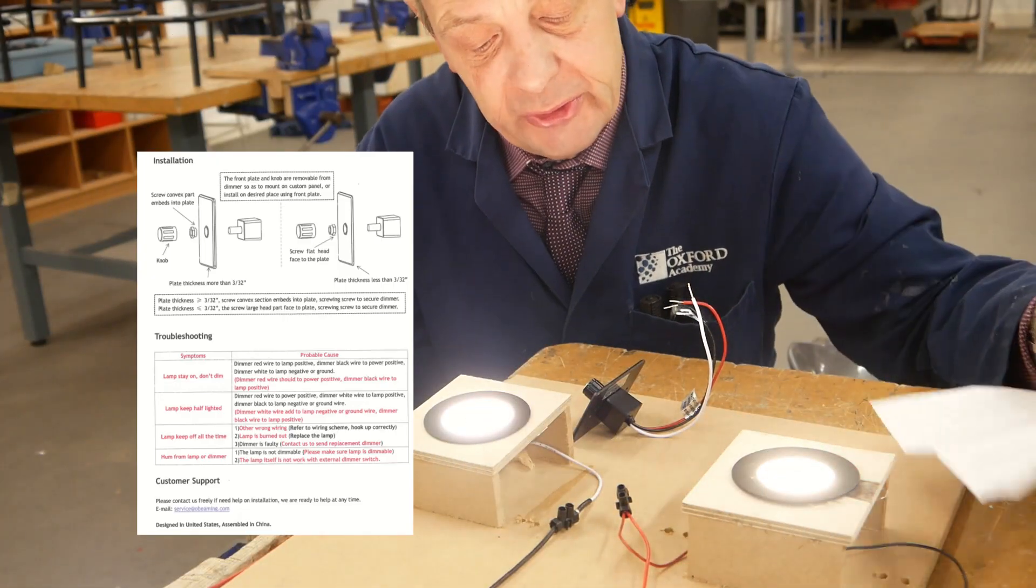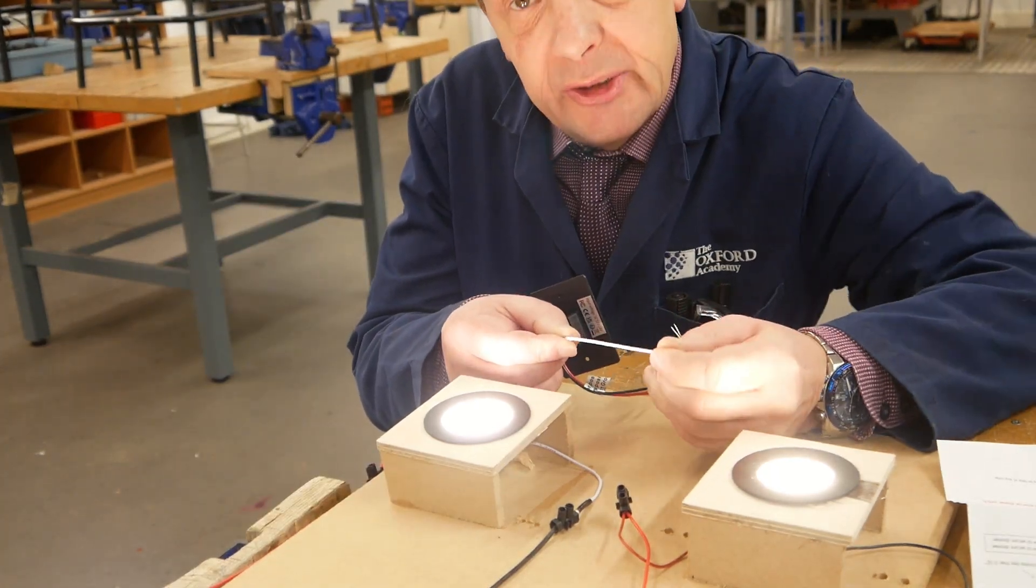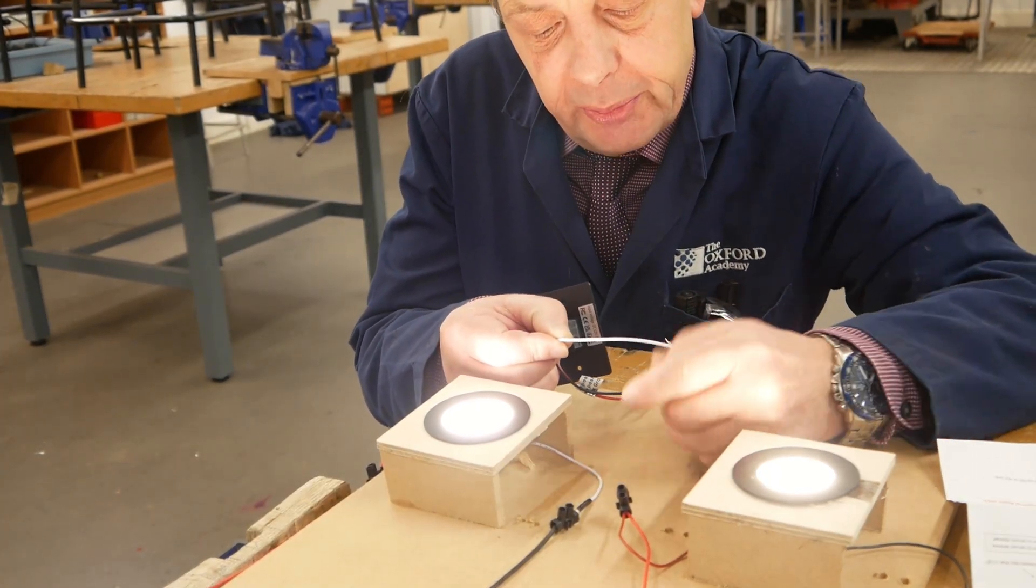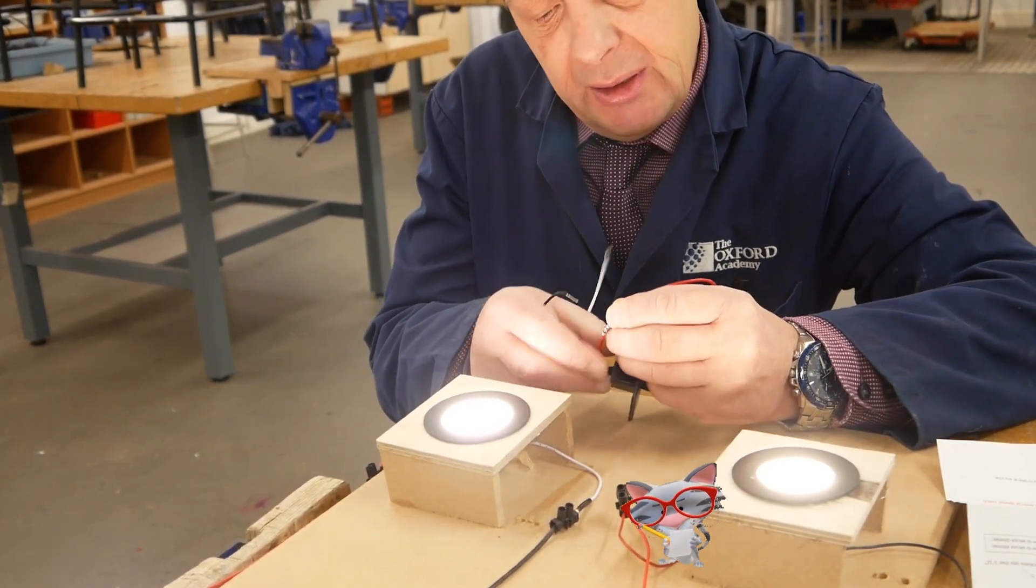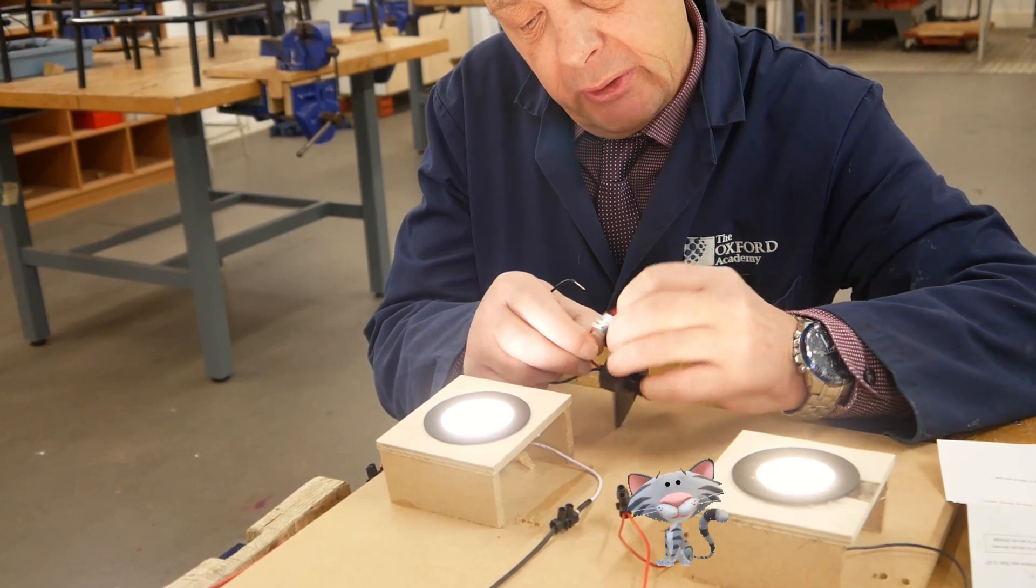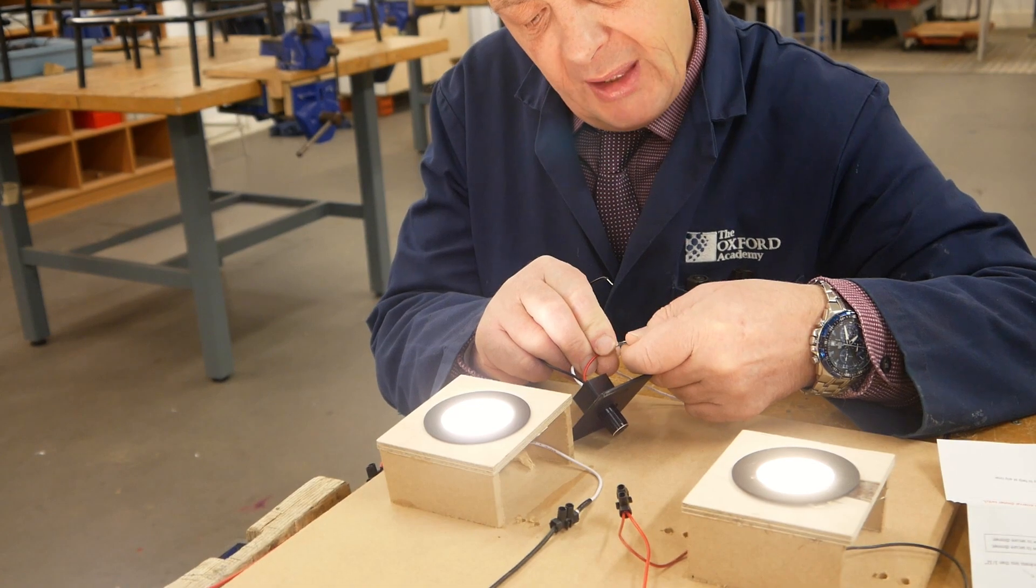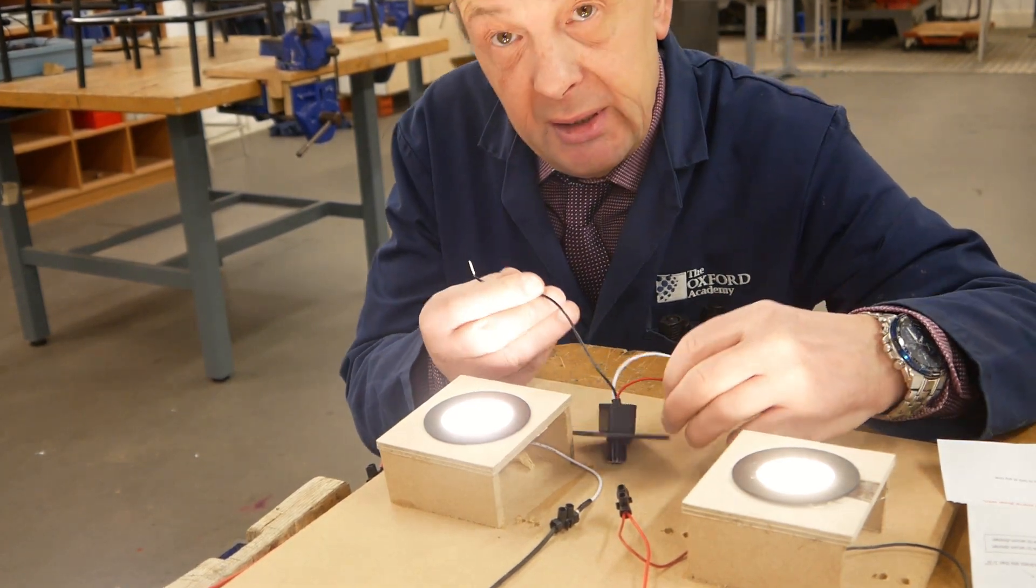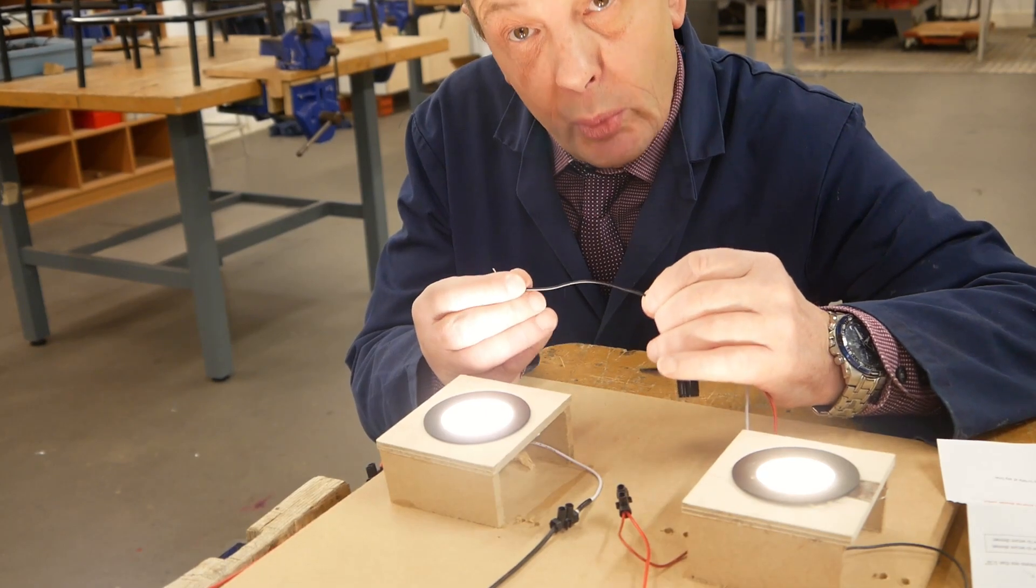So let's have a look at the dimmer switch. Three cables: the white is the earth so I'll be putting a little piece of black heat shrink on there to denote that. The red is the positive to the power and the black is a positive to the light. So we're going to dive in and wire these up now.